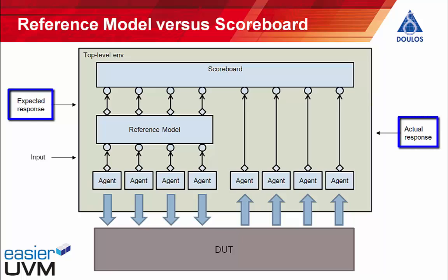The actual response from the design under test is also sent to the scoreboard, and the scoreboard then compares pairs of transactions — one expected transaction and one actual transaction. All being well, there should be one actual transaction corresponding to each expected transaction, otherwise the scoreboard will give an error. The alternative is to have the reference model as part of the scoreboard, but the disadvantage is that it makes the scoreboard dependent on the design under test. Using the architecture shown here, the scoreboard can be generic and reusable, and only the reference model depends on the details of the actual design under test.